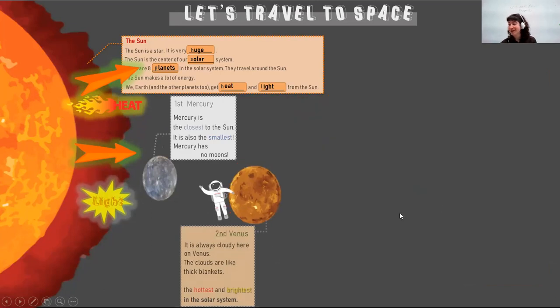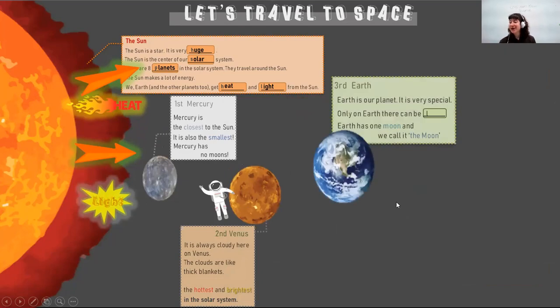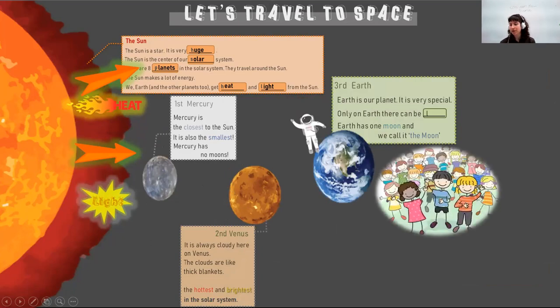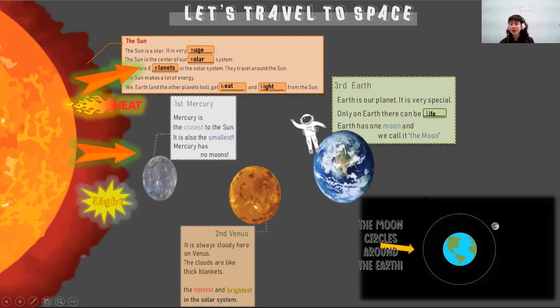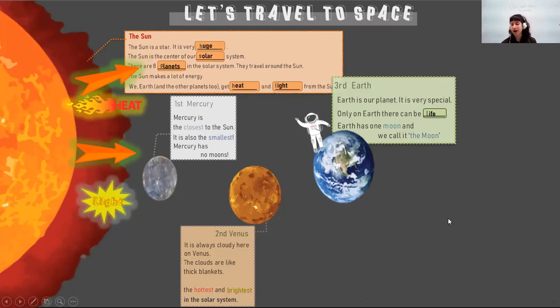So our next planet, do you know? It's earth. Earth is our planet where we live. Only on earth there can be life. And do you know how many moons that earth has? Has one moon, right? We call it the moon. The moon goes around the earth and then the earth also goes around the sun.